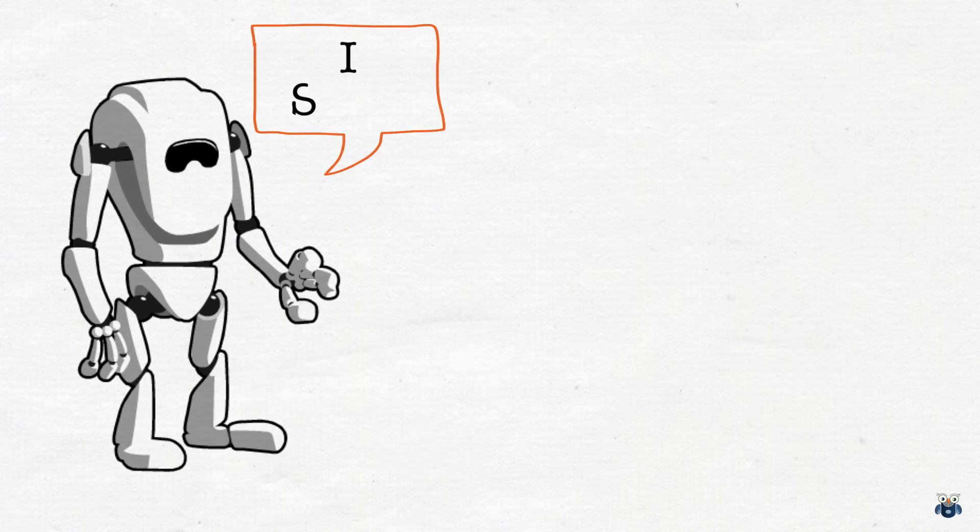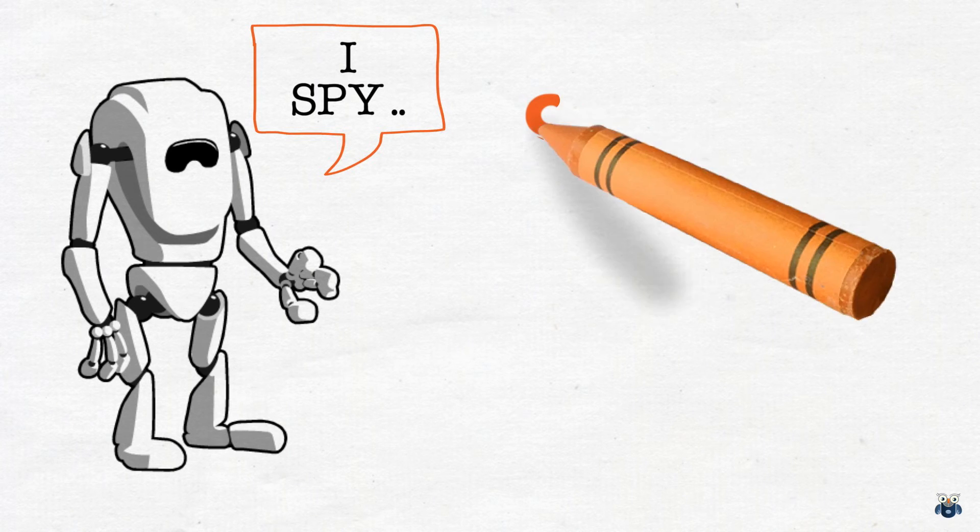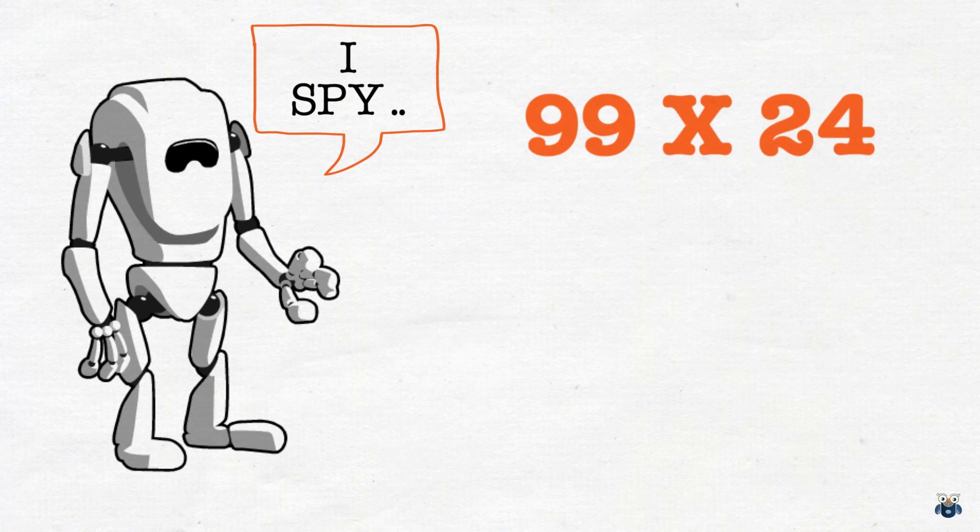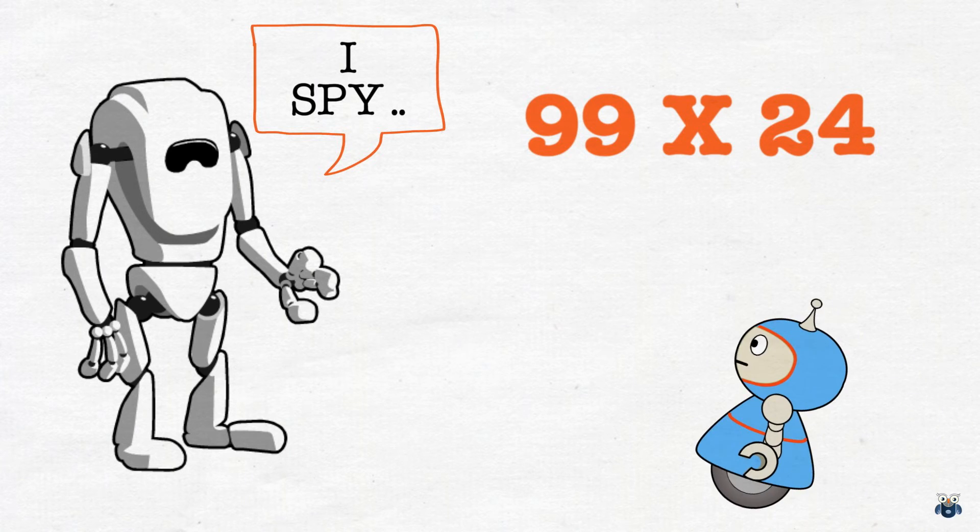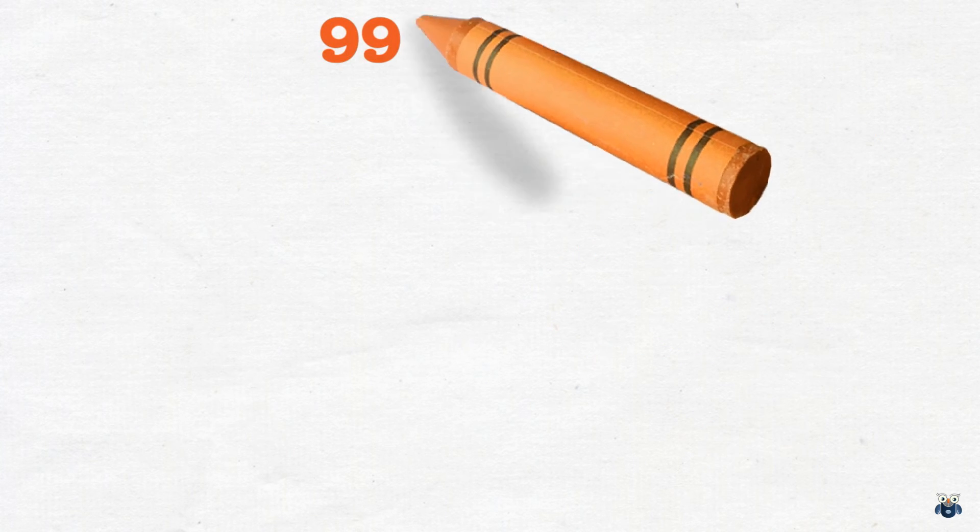Now many of you would have noticed that both the multiplicand and the multiplier have the same number of digits. For example, look at this problem we tackled earlier. 99 times 24. Both 99 and 24 have the same number of digits, which is 2.